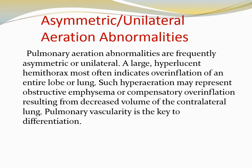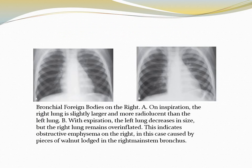Asymmetric or unilateral aeration abnormalities: pulmonary aeration abnormalities are frequently asymmetric or unilateral. A large hyperlucent hemithorax most often indicates overinflation of an entire lobe or lung. Such hyperaeration may represent obstructive emphysema or compensatory overinflation resulting from decreased volume of the contralateral lung. Pulmonary vascularity is the key to differentiation. On inspiration the right lung is slightly larger; on expiration the left lung changes volume more while the right lung remains the same — the right is the abnormal lung caused by a foreign body inside the bronchus.